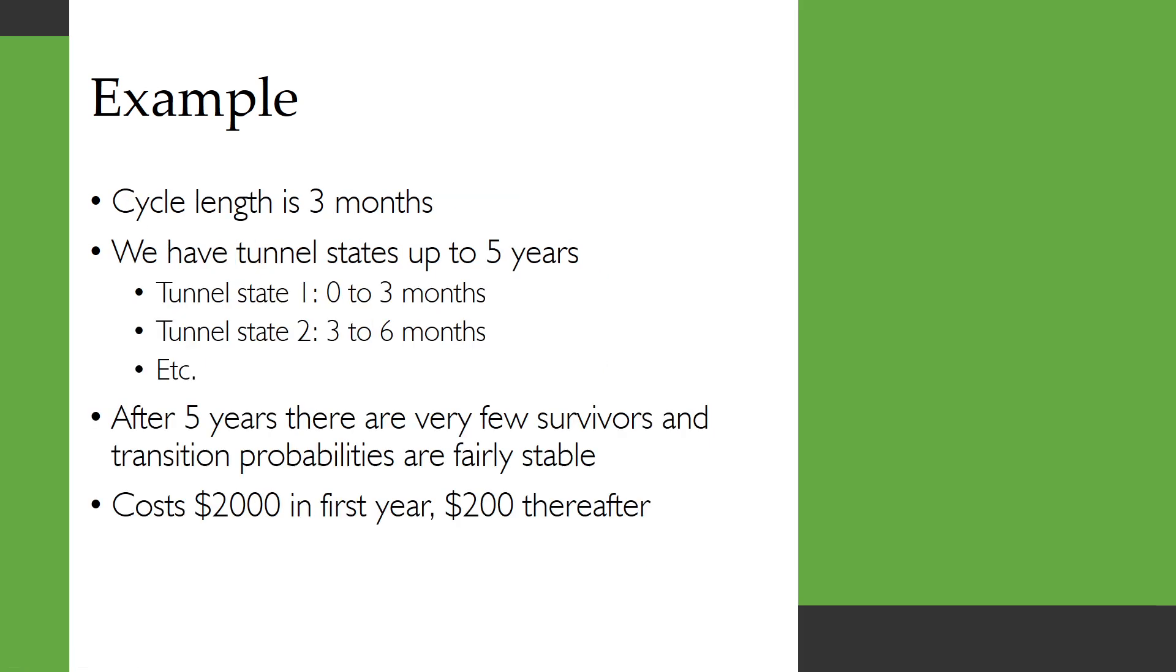If you're interested the parameters for that log normal distribution are both 0.5. So we decide in this case that our cycle length is three months and we have tunnel states up to five years. That means four cycles per year for five years, we're going to have 20 tunnel states. The first tunnel state is referring to the time spent zero to three months post disease diagnosis. The second tunnel state is three months to six months post diagnosis.